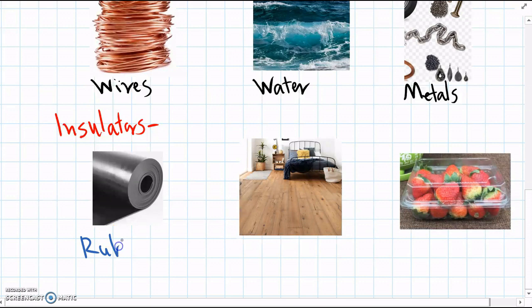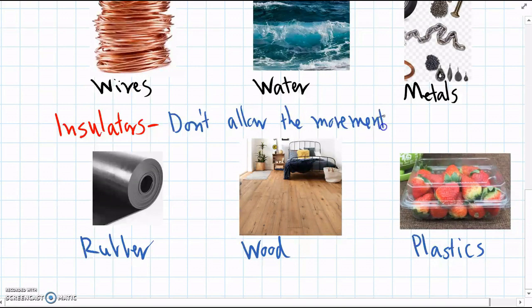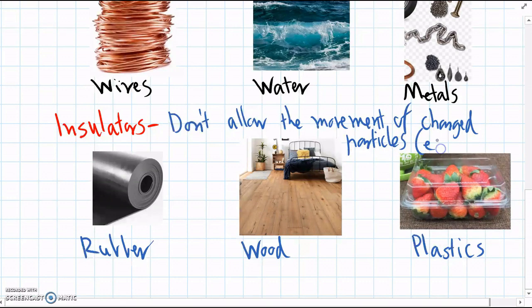Materials like rubber, wood, and plastic — all different types of plastics — don't allow electrons to move through, and we call them insulators. They don't allow the movement of charged particles, which again are usually electrons.